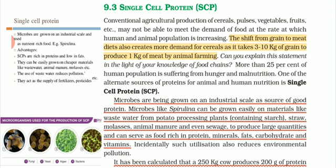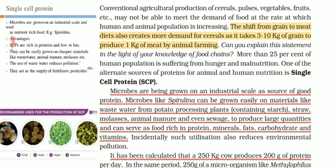This can be explained in light of food chains — those chickens and hens from which we take meat are also depending upon grains. Either we eat vegetarian or non-vegetarian diet, ultimately we are dependent upon plants and grains. More than 25% of the population is suffering from hunger and malnutrition. The solution could be single cell protein.